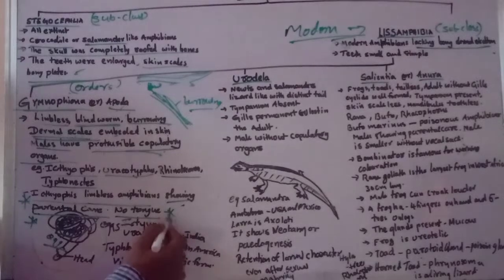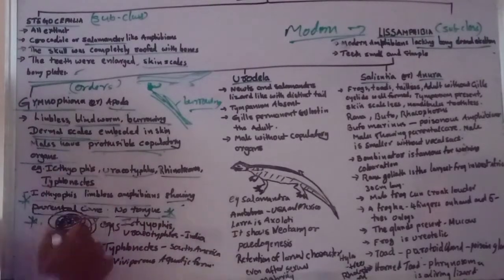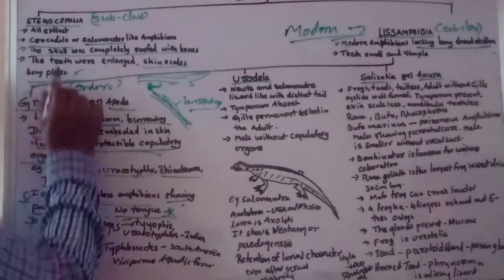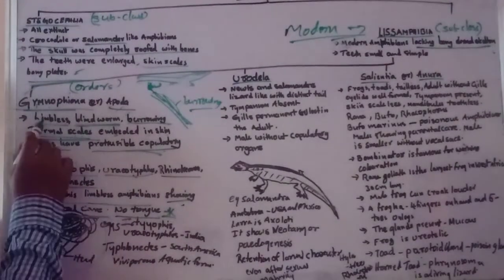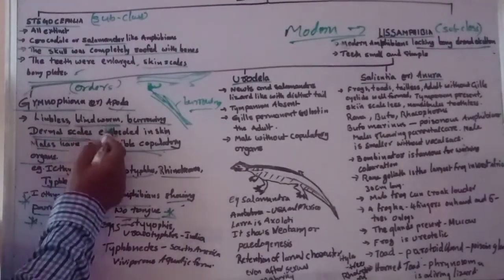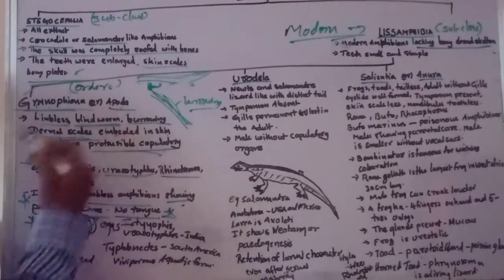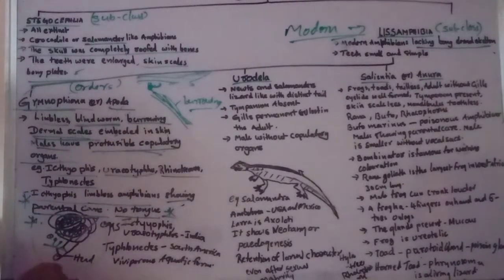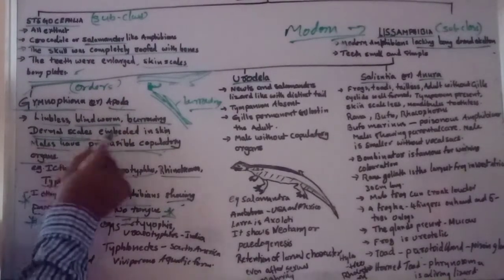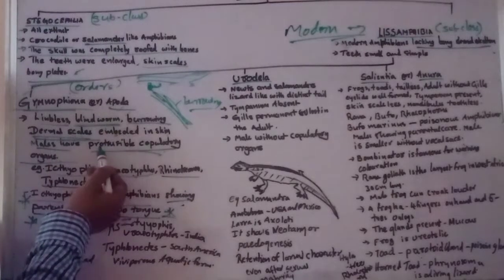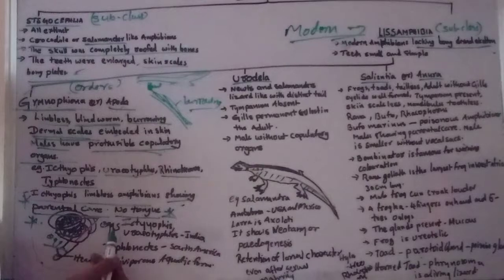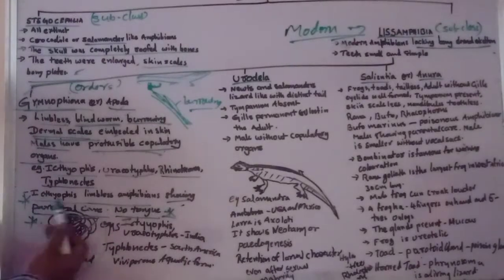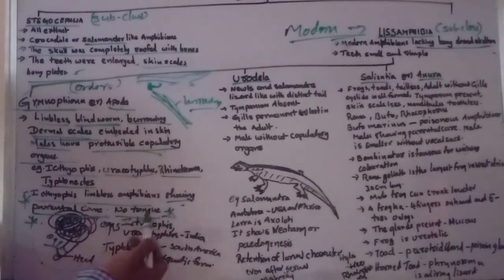Ichthyophis shows parental care — it is a worm-like limbless amphibian. There is no tongue, which is also very important. The body is covered with scales, and the male has a protrusible copulatory organ.